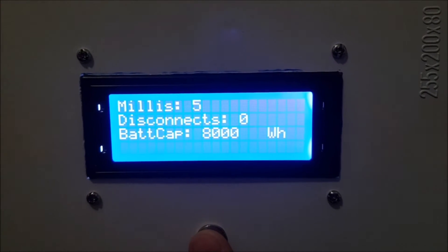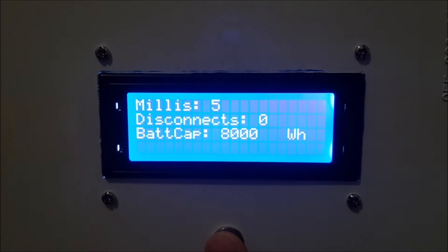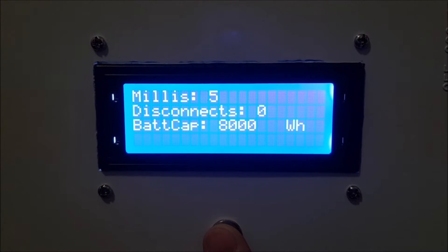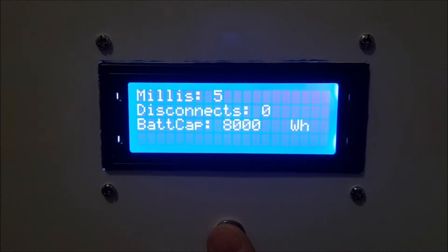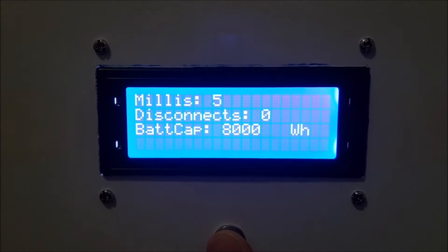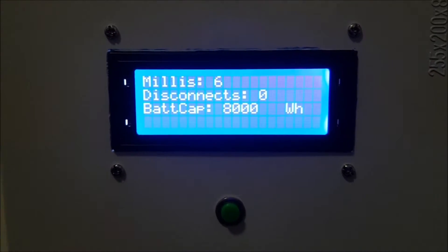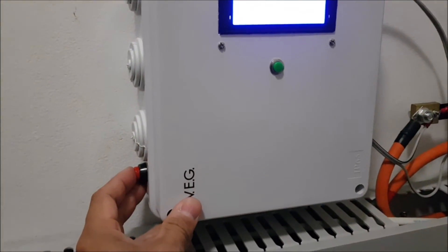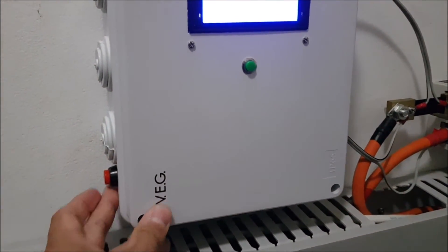Cycles, how many watt-hours in that cycle, and the temperatures. And on the second page we have our timer, disconnects, and now showing the battery capacity which is stored inside the box. And now we can switch over to the discharge mode.